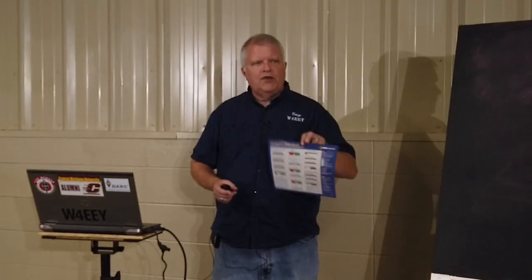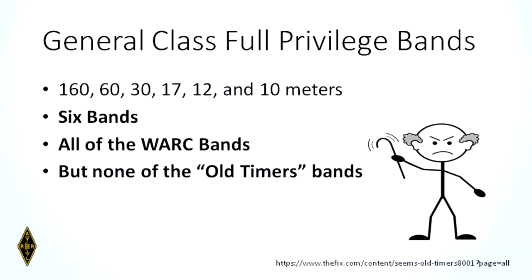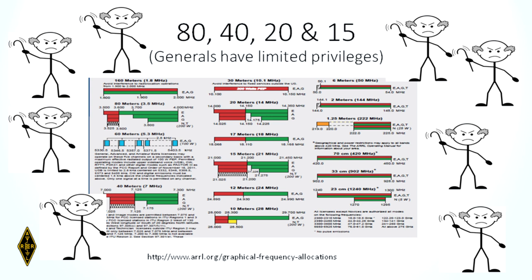When you get your general class license, you will have full privileges on 160 meters, 60 meters, 30 meters, 70 meters, 12 meters, and 10 meters — six bands, all of the World Administrative Radio Conference bands. But on the old-timers bands, you're still going to have some restrictions. The old-timers bands are 80, 40, 20, and 15 meters.